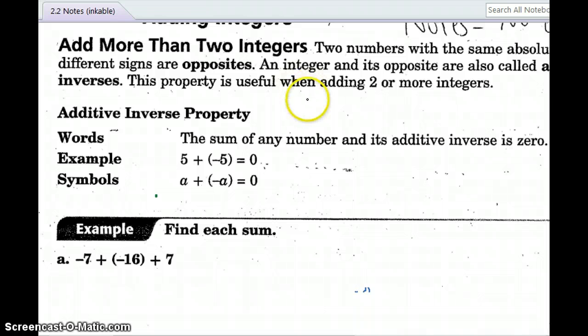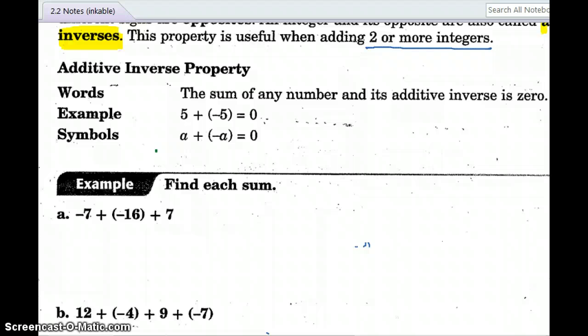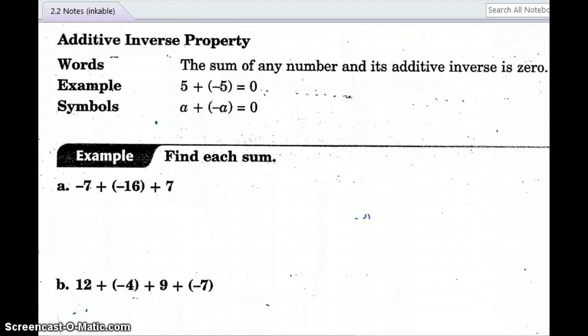My screen ran off, but they are additive inverses. Here's that word, inverses of each other. And this property is useful when you're adding more than two integers, two or more integers. So highlight that word additive inverses. So go over there and get additive off of your paper.